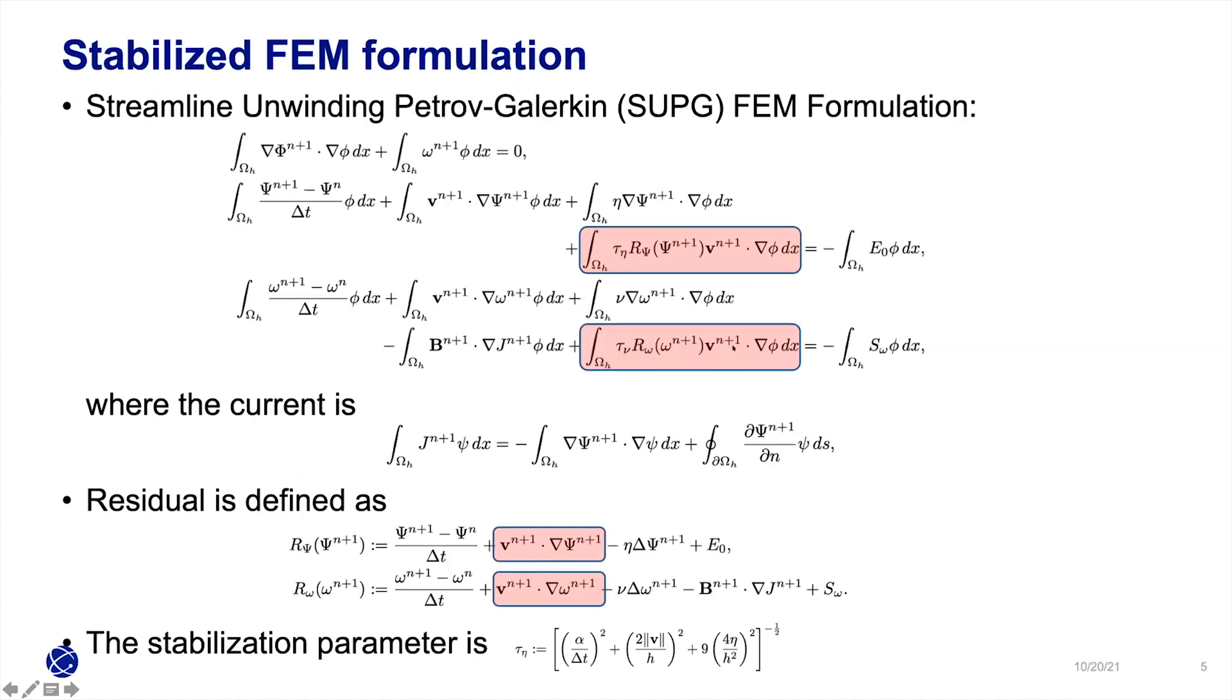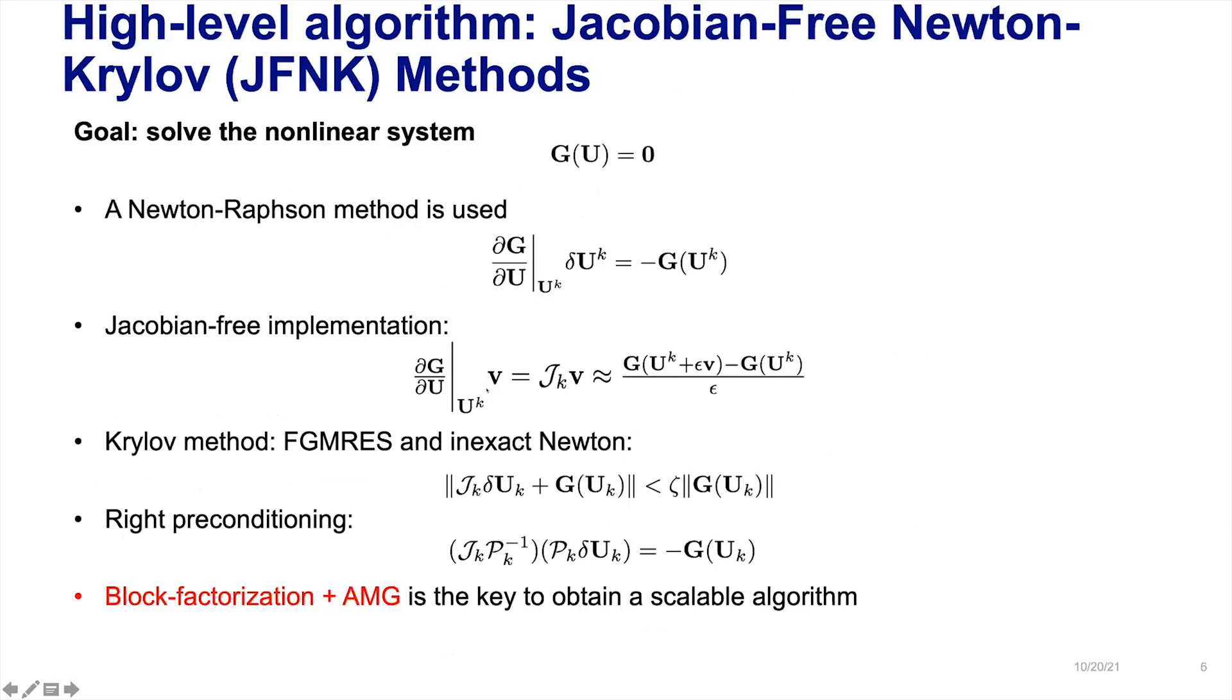To discretize, we use streamline SUPG formulation. It's quite standard in some sense. We use H1 finite element for all the components: phi, psi, and omega, which is the stream function, vorticity, and magnetic potential.